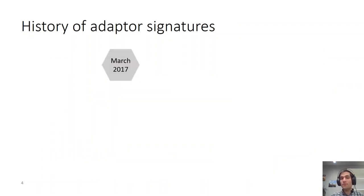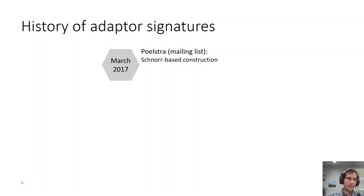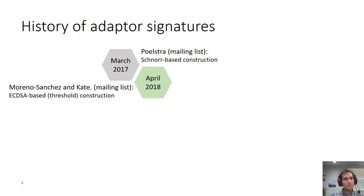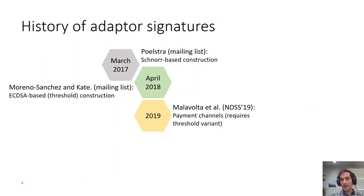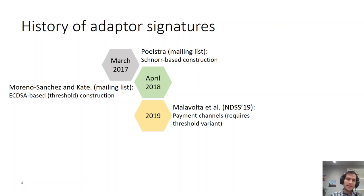Adapter signatures were introduced in March 2017 by Postra in a mailing list. He proposed a Schnorr-based construction for adapter signatures. A year later, Pedro Monero-Sanchez and Anakin Cades proposed a threshold ECDSA-based variant of adapter signatures in a mailing list. In 2019, adapter signatures were used by Malavolta et al. in order to construct payment channels, requiring the threshold variant. However, they did not formalize adapter signatures as a standalone primitive.